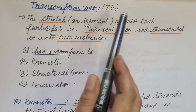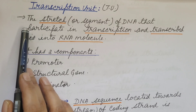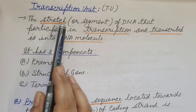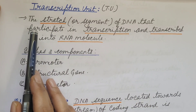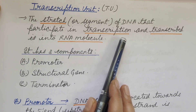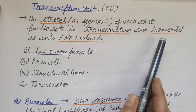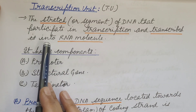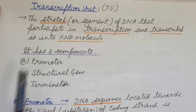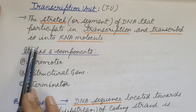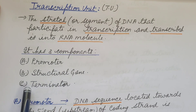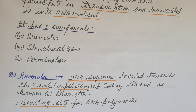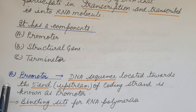Now let us see the transcription unit. It is the stretch or segment of DNA that participates in transcription and is transcribed into an RNA molecule. It has three components: promoter, structural gene, and terminator. Let us discuss them one by one.